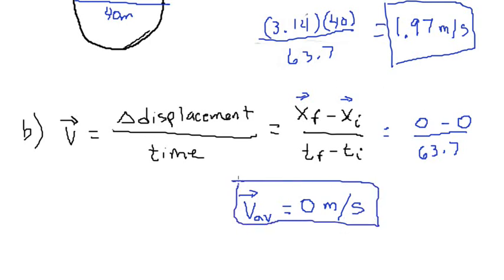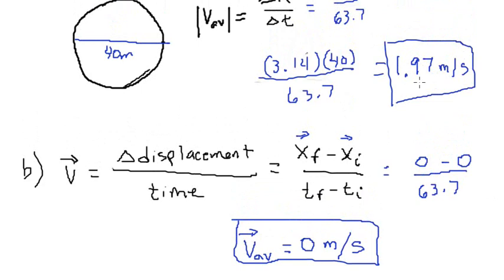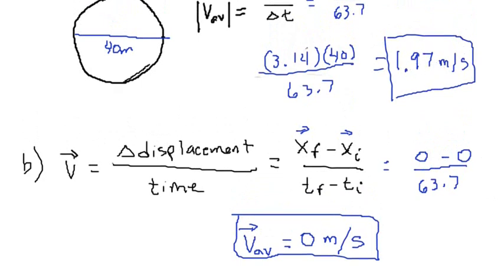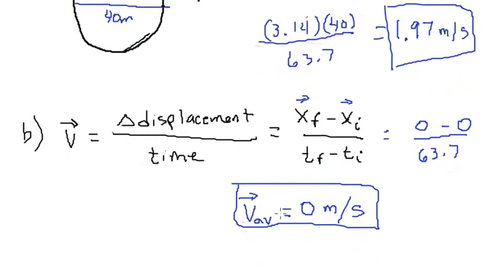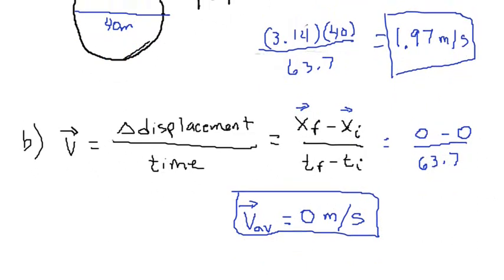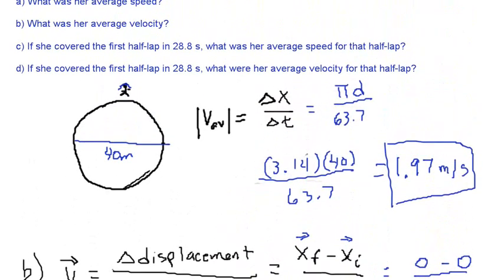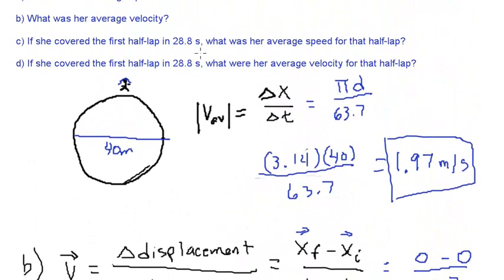This is the average velocity. Notice that the average speed is 1.97 meters per second, but the average velocity is zero meters per second. Notice that that is a little bit different. Let's go and do the next problem.